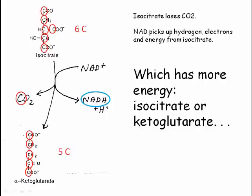Something else you can think about is which one of the molecules has more energy, isocitrate or ketoglutarate? Isocitrate is losing carbon, but we're not concerned about that. What we are concerned about is that the NADH is coming and picking up hydrogen and electrons and energy. That should tell you that that energy is coming from isocitrate, and that therefore alpha-ketoglutarate will actually have less energy because the energy from isocitrate has gone to NADH.